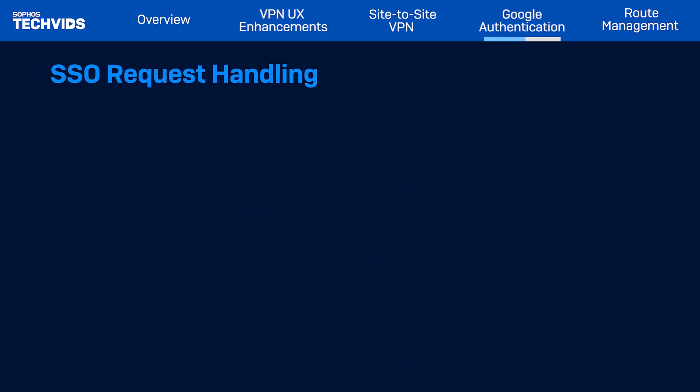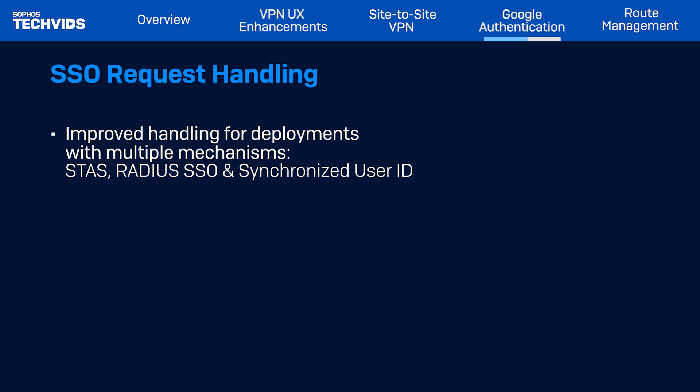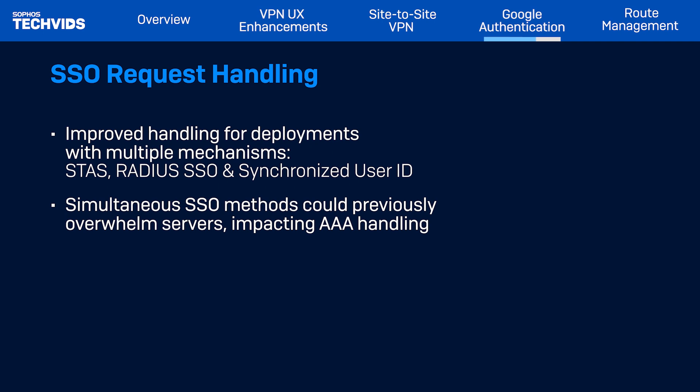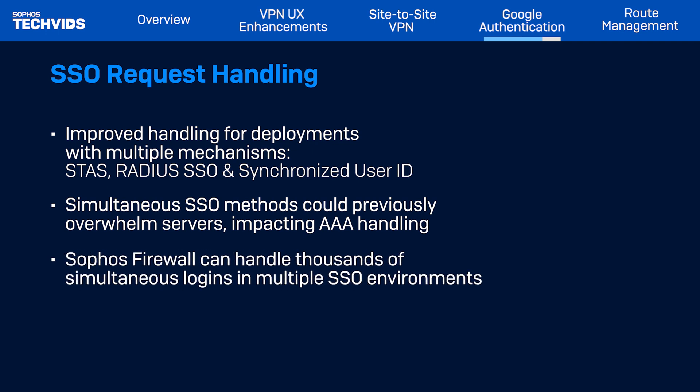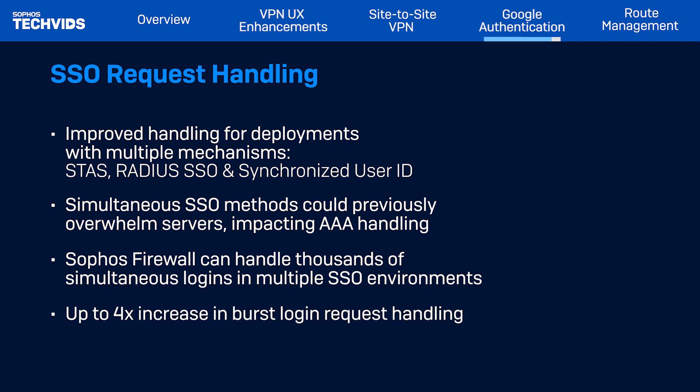SFOS v21 also brings significant performance improvements in SSO request handling, addressing challenges in deployments with multiple SSO mechanisms like STAS, RADIUS SSO, or Synchronized User ID. Previously, these setups could overwhelm the server, as all SSO methods would attempt to log in the same user simultaneously, affecting AAA request handling. The enhancement allows the Sophos Firewall to effectively manage thousands of simultaneous login requests, even in environments utilizing a mix of STAS, RADIUS SSO, and Synchronized User ID. With this update, the server can process requests up to four times faster and effectively discard duplicate requests from multiple SSO client types once a user is authenticated.